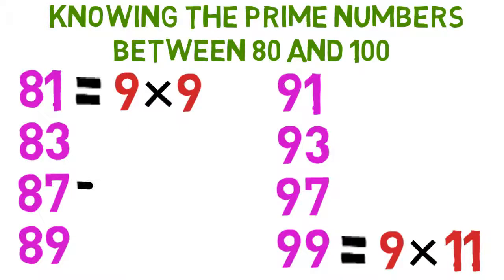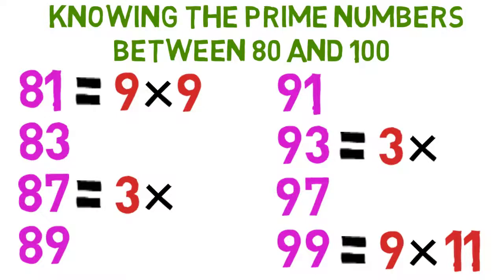Two other numbers, 87 and 93, are both divisible by three, because the digits in each case add up to a number that is divisible by three. 87 equals 3 times 29, and 93 equals 3 times 31, so neither number is prime.